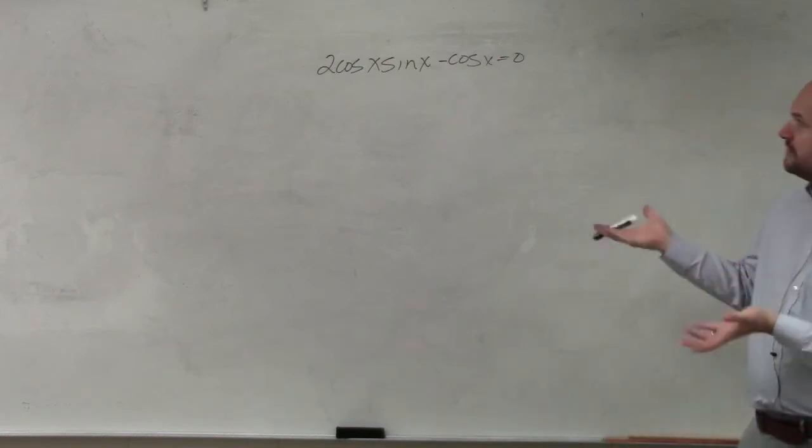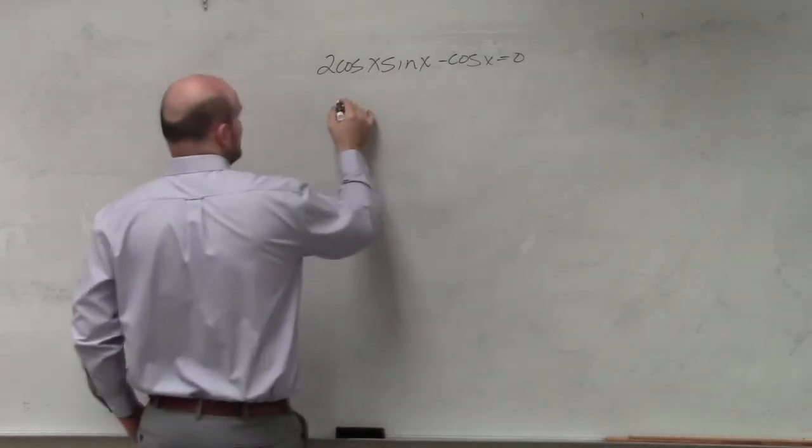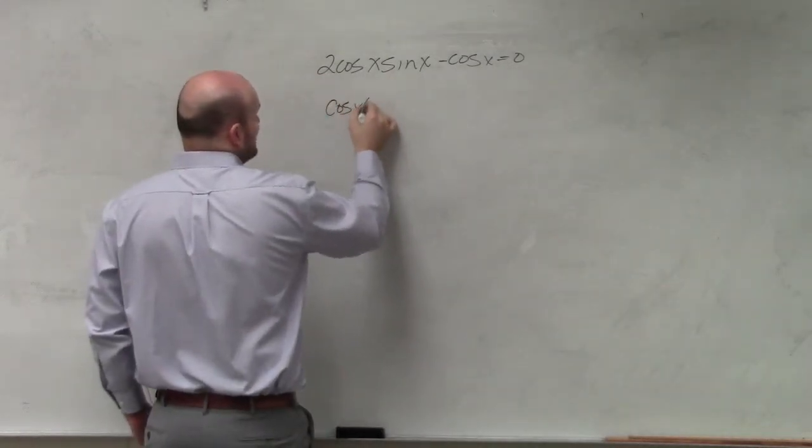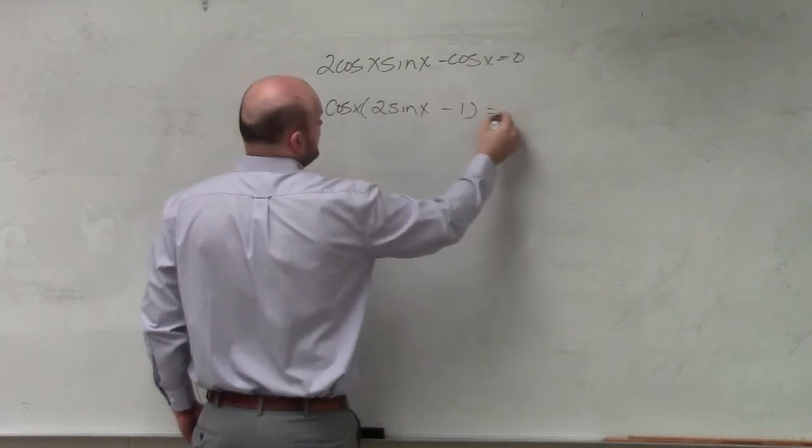So we got to see if they have something in common that we can factor out, and we can see that they both share a cosine. So by factoring out a cosine, I'm left with 2 sine of x minus 1 equals 0.